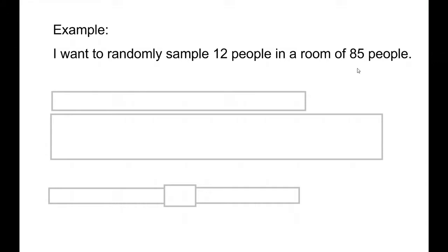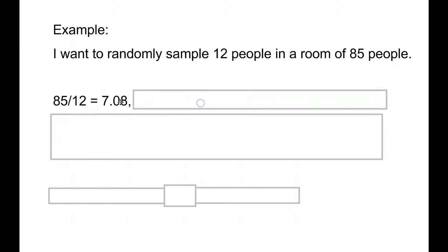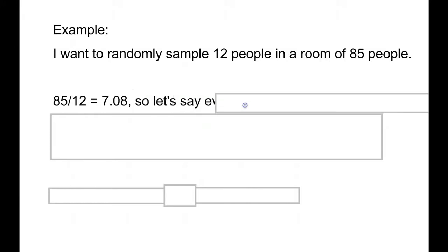The way I do that is take my total of 85 and divide by the 12 people I want in my sample. That comes out to somewhere roughly close to 7. So let's say every 7th person is going to be in the sample, because if I count every 7th person, I'm going to end up with some number very close to 12.